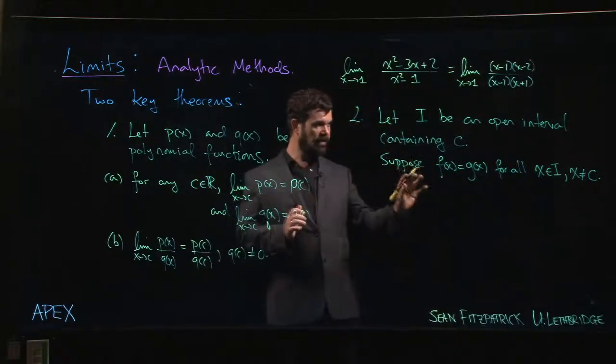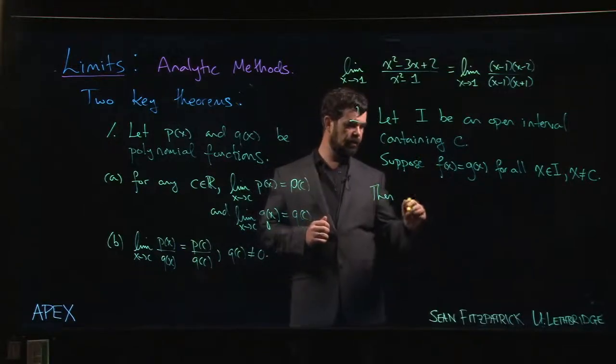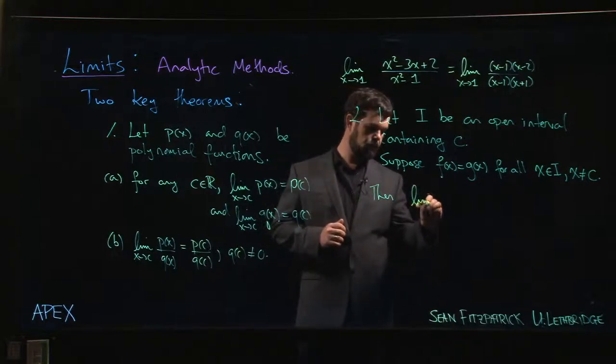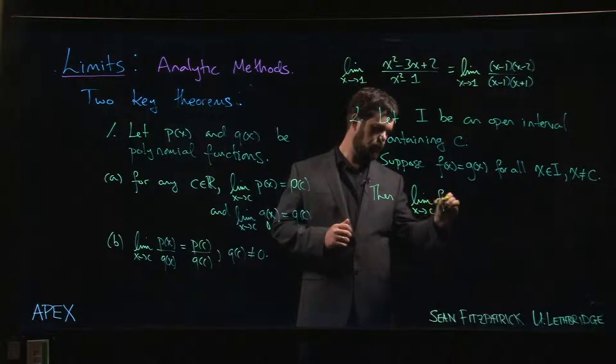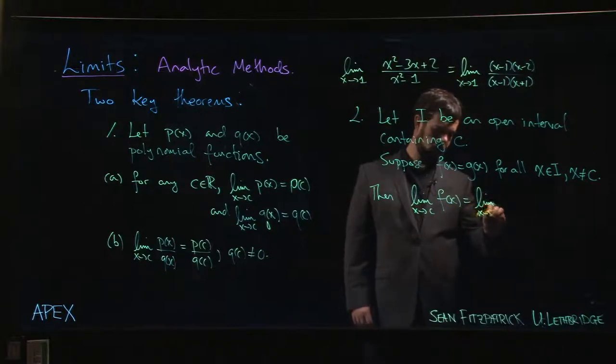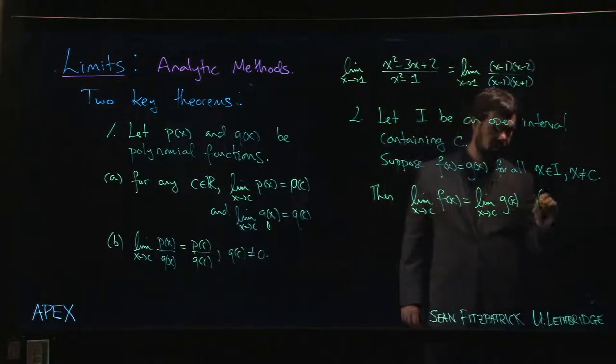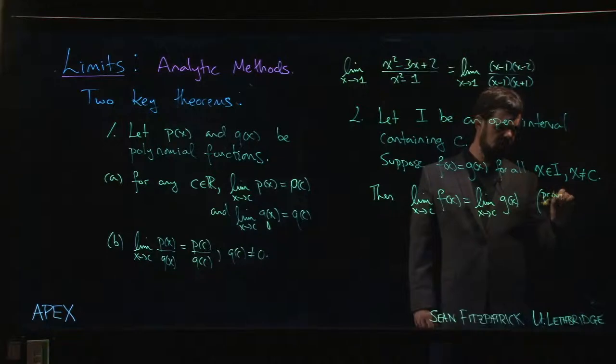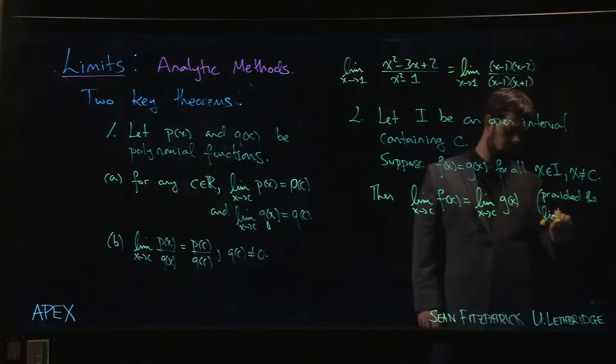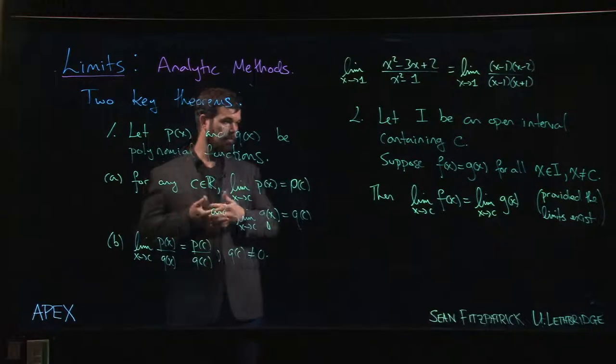If this happens, then you can conclude that the limits of these two functions at C are equal, with the caveat that you need the limits to exist. So if you have two functions that agree everywhere except at one point, they're going to have the same limit at that point.